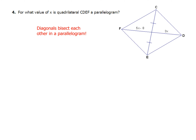The diagonals bisect each other in a parallelogram. So if that's the case, this piece right here — the 5x minus 8 — and the 3x, both of those pieces are going to be the same value. It's easy to set up an equation: 5x minus 8 equals 3x. You've just got to use some algebra skills and solve that.